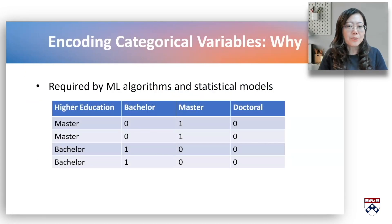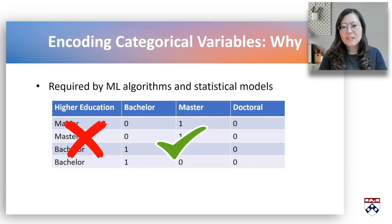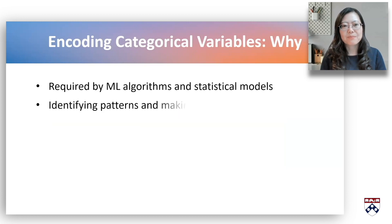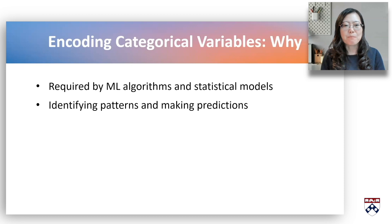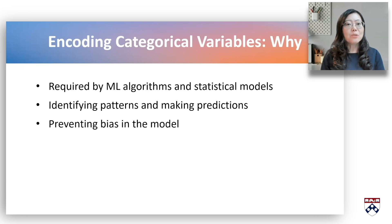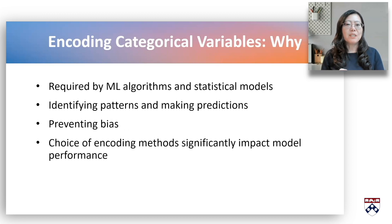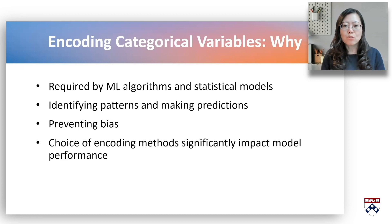The reason for encoding is that most machine learning algorithms require numbers as data, not strings or text. So these strings or text variables must be transformed into numerical values. This allows the model to identify patterns in the data and make predictions based on those patterns. Encoding also helps to prevent bias in the model by ensuring that all features are equally weighted. The choice of encoding method can have a significant impact on model performance, so it's important to choose an appropriate encoding method based on the nature of the data and the specific requirements of the model.